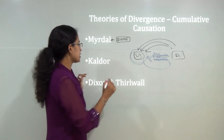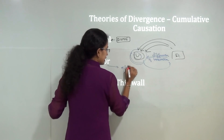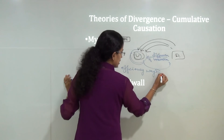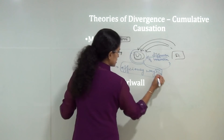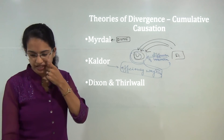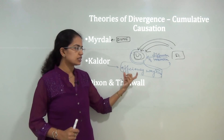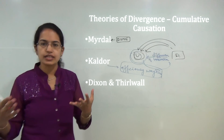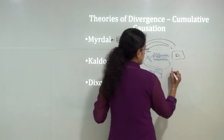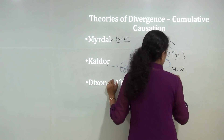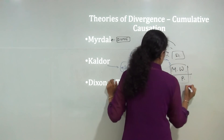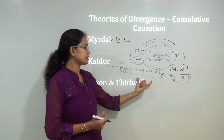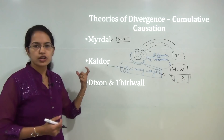The next is Kaldor. Kaldor focused his idea on efficiency wages. His whole concept rested on the idea that efficiency wages equals monetary wages divided by labour productivity. This efficiency wage was the main idea of Kaldor's theory.